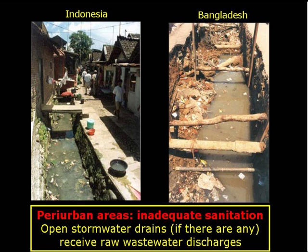In peri-urban areas of developing countries, sanitation is usually very inadequate. Raw wastewater is discharged into open stormwater drains if there are any. These pictures are from Indonesia and Bangladesh, but really they could be from anywhere.